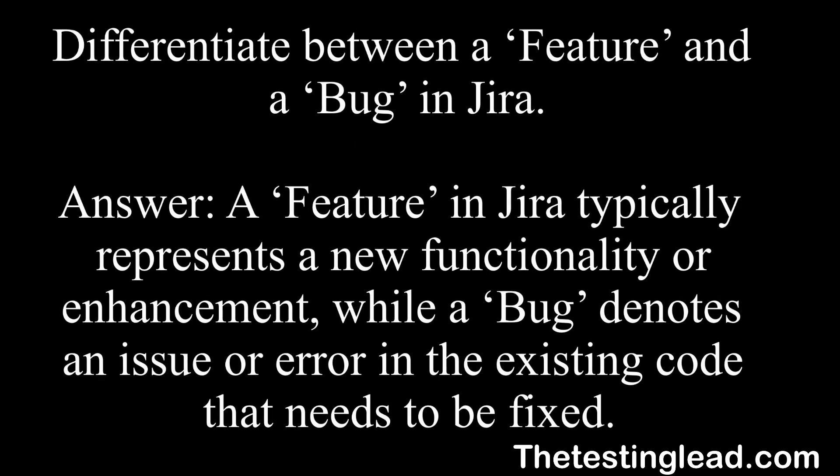Differentiate between a feature and a bug in Jira. A feature in Jira typically represents a new functionality or enhancement, while a bug denotes an issue or an error in the existing code that needs to be fixed.